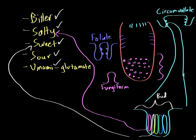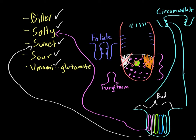We're able to taste all five of these different tastes everywhere in the tongue. It's not the case that bitter compounds can only be tasted in one region, salty in another, and sweet in another — that's not how it works. Instead, we're able to taste all five compounds throughout the entire tongue, with most taste buds concentrated in the anterior part.